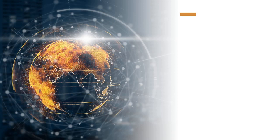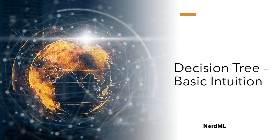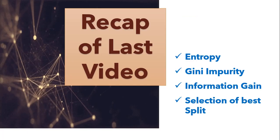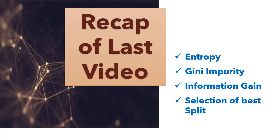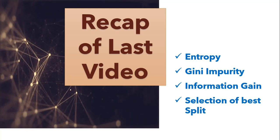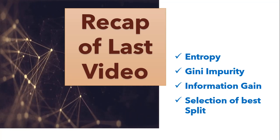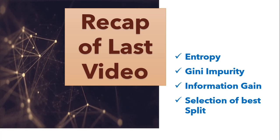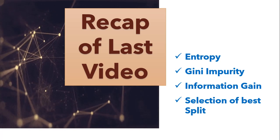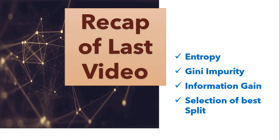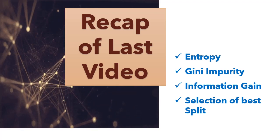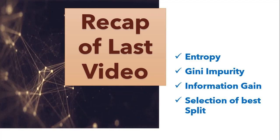Hello world, it's Rahul. Welcome back guys to machine learning tutorial. We have discussed basic intuition of entropy, Gini impurity, information gain, and selection of best split in the last video. If you haven't watched that yet, please go and watch — I have attached the link in the description. Today we are going to discuss how we can solve a classification problem using the decision tree algorithm.